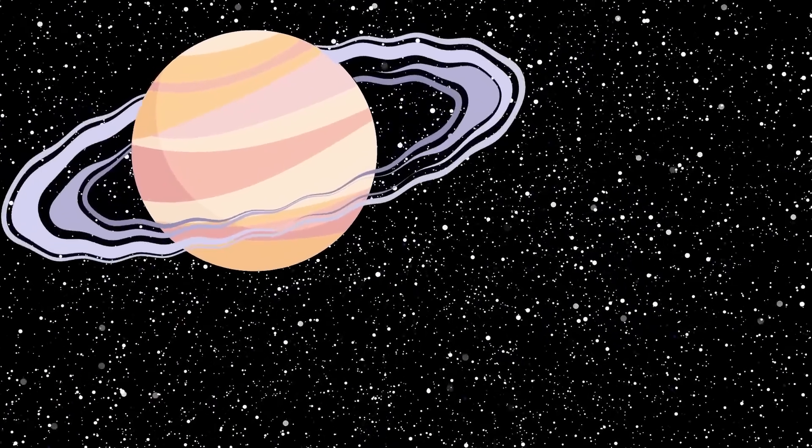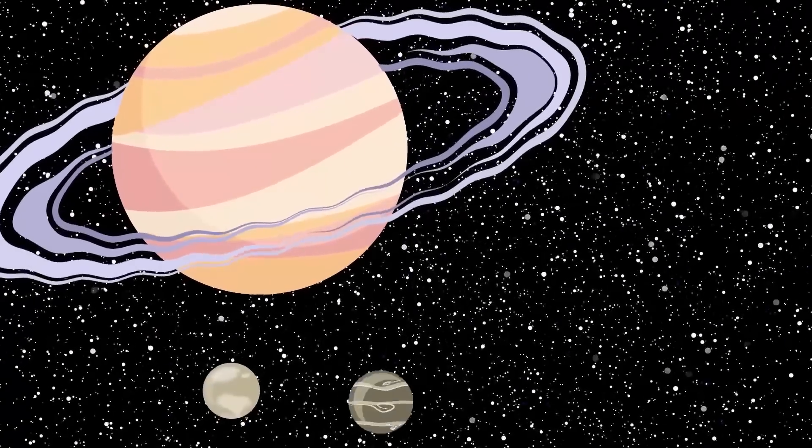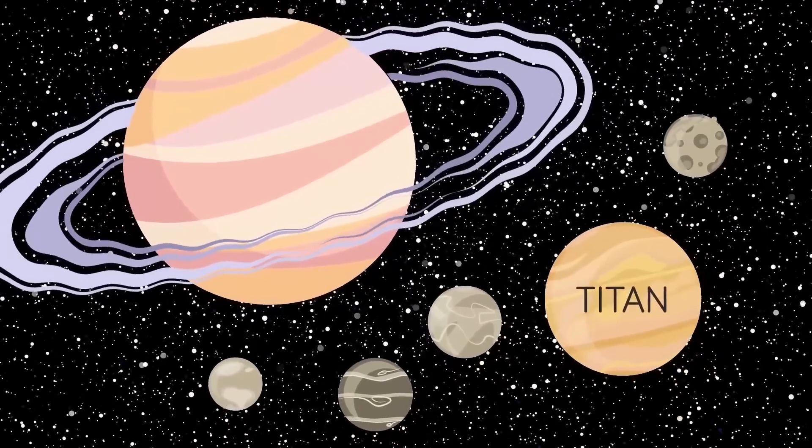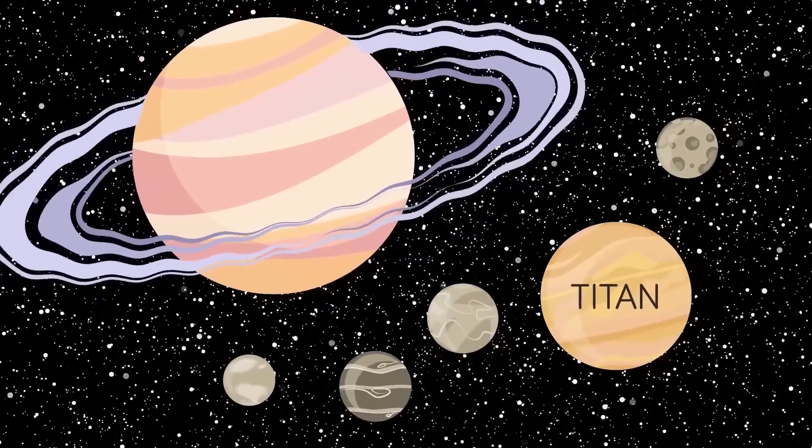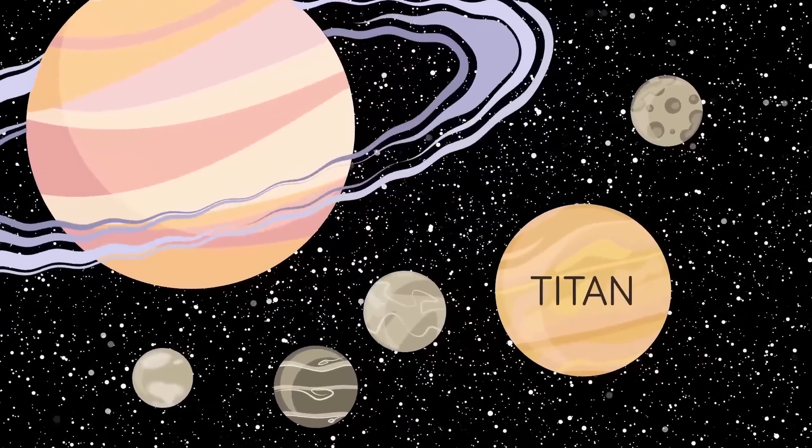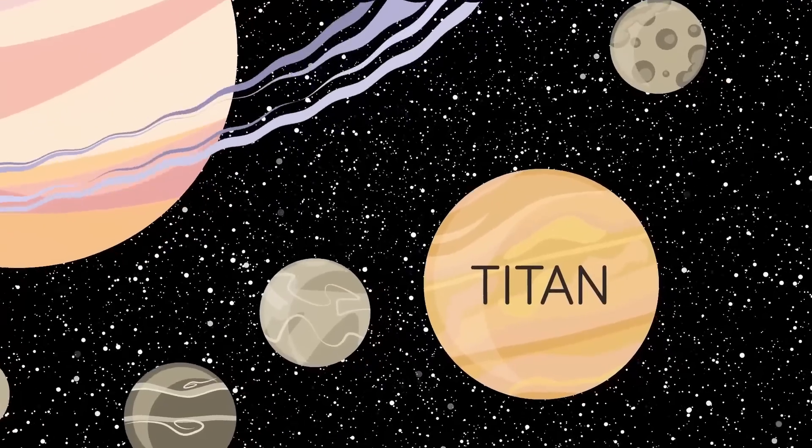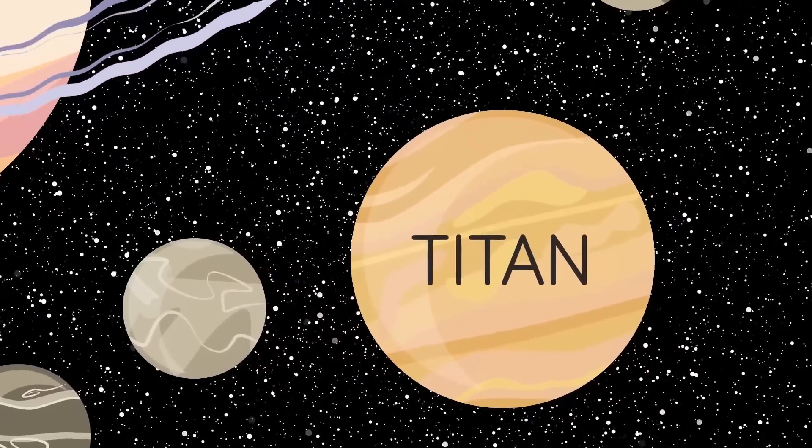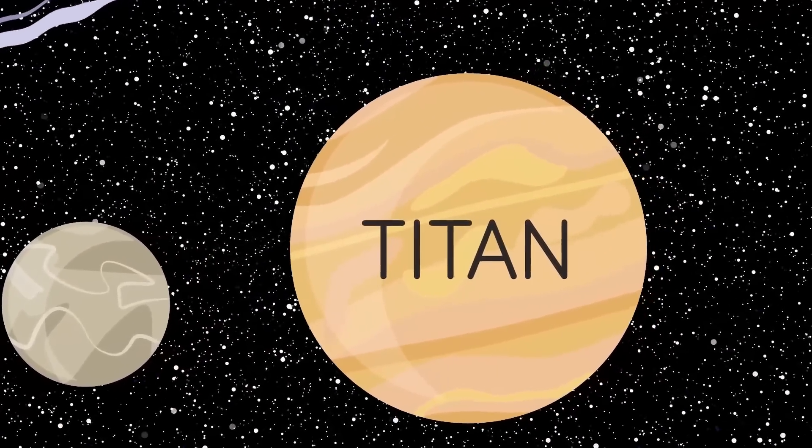But going back to Saturn, scientists think that some of the moons there may support life, such as Titan, which like Earth has an atmosphere, and is probably the most Earth-like body which is around a billion miles from the sun. It also has rain, oceans, lakes, and what one writer described as vicious storms.